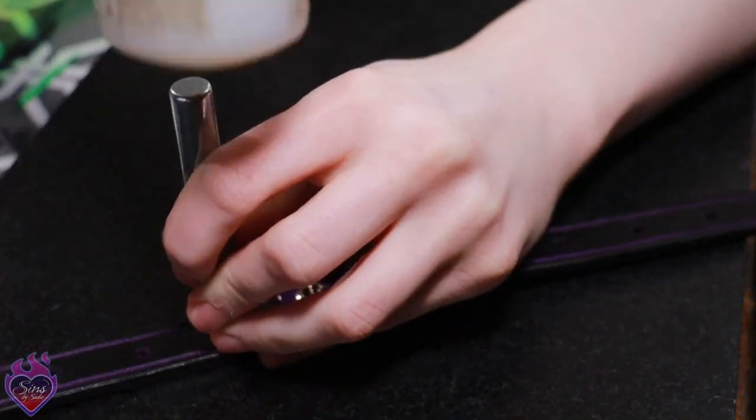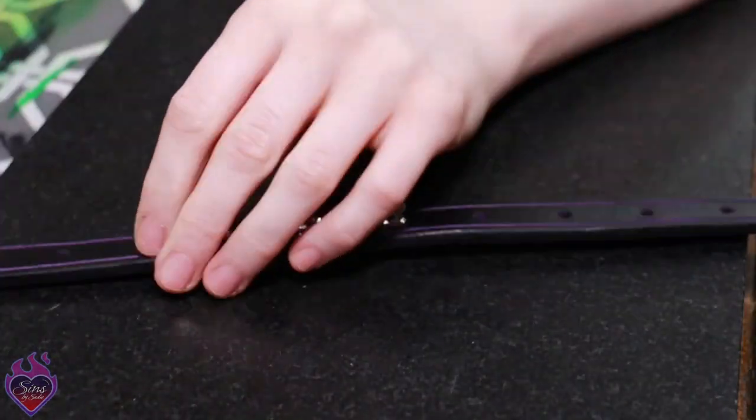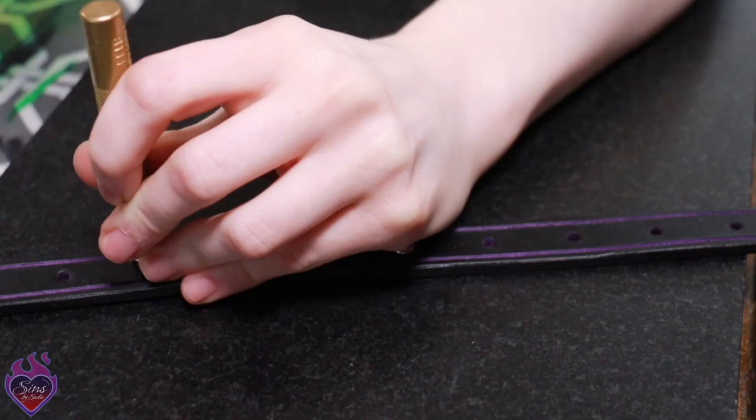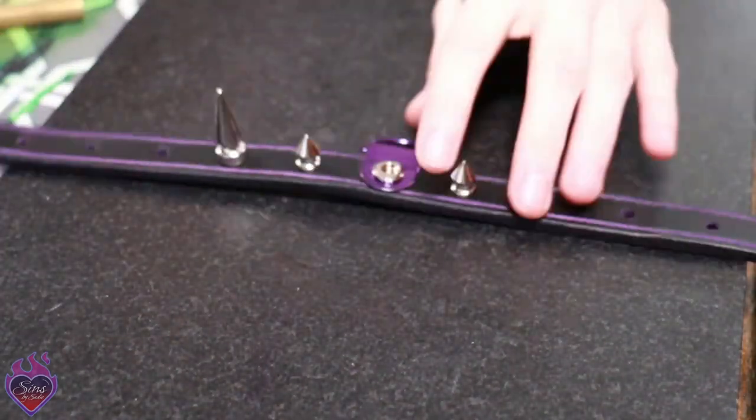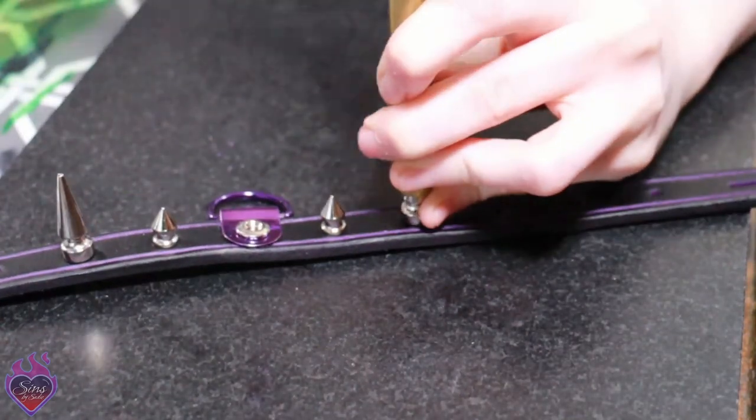Put the post through your holes and attach the top of the spike. Place the setting tool over the spike and hammer with moderate strength until the spike fits snugly on the leather.